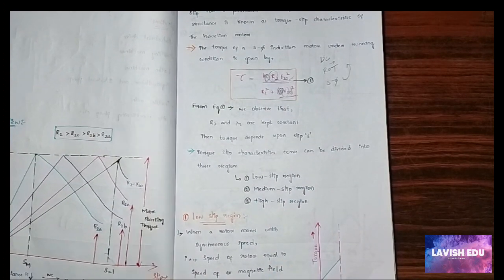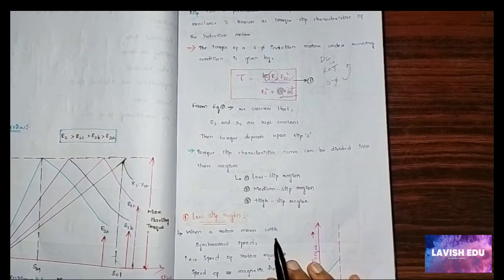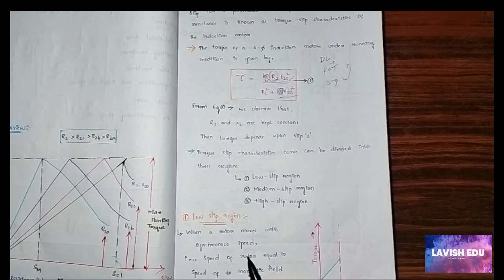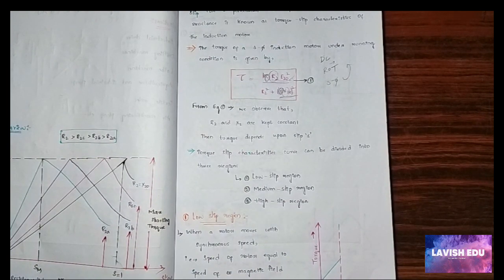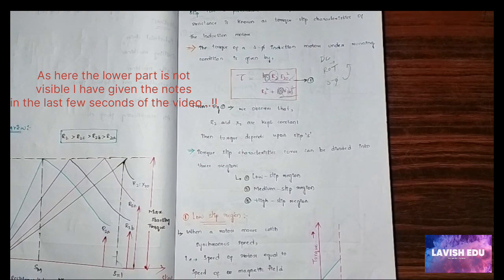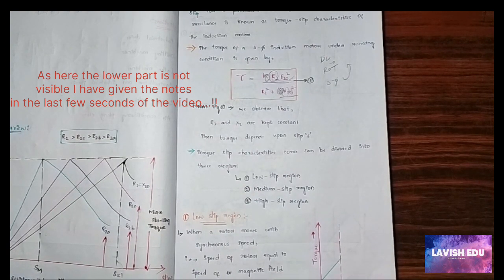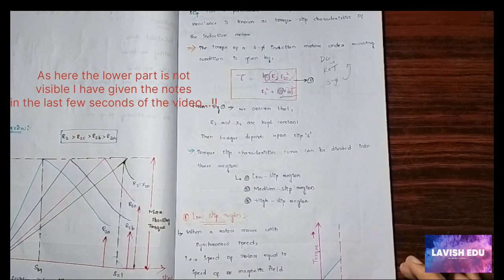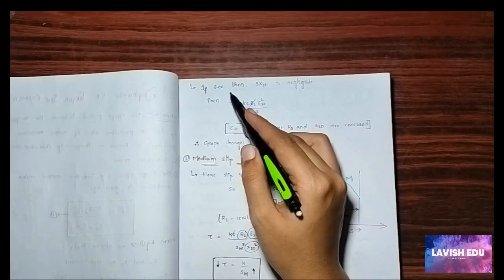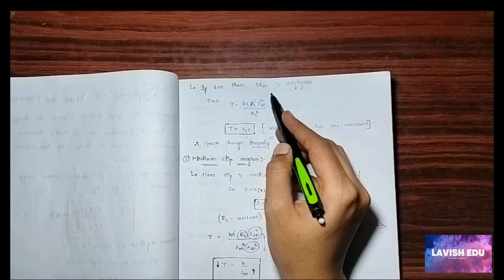First we will see the low slip region. For low slip region, when a rotor moves with synchronous speed, speed of the rotor equals to the speed of the magnetic field, the slip s equals to zero, which is the linear formula generated between the torque and the slip. So s is very small in this situation.